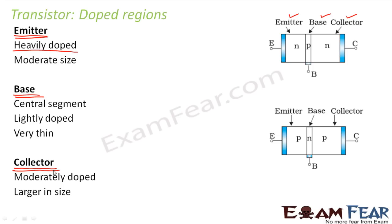The third region is the collector, which is moderately doped. As the name suggests, the collector collects the charge carriers emitted by the emitter. The one collecting the carriers doesn't need to be very highly doped, which is why the collector is moderately doped. However, the collector is the largest in size among the three regions, because it needs enough space to collect all the charge carriers.